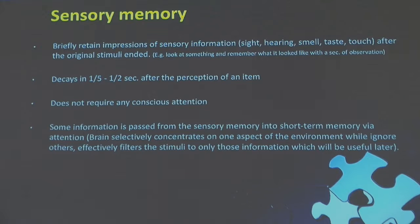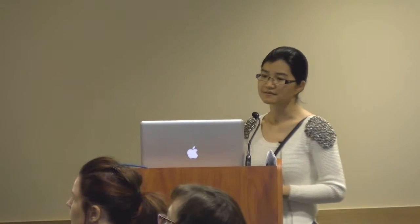Sensory memory allows us to briefly retain the impression of sensory information — including sight, hearing, smell, taste, and touch — after the original stimulus ends. For instance, when I look at this computer, I can remember its color within a second of observation. Sensory memory decays very fast after perception and does not require conscious attention. Some information from sensory memory is passed into short-term memory through a process called attention, during which the brain selectively concentrates on one aspect of the environment while ignoring others.